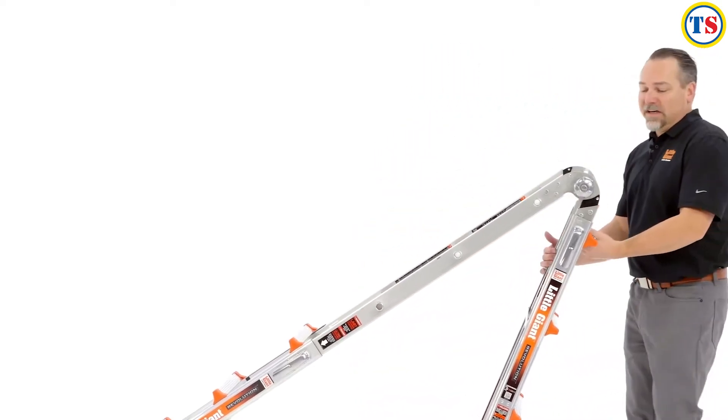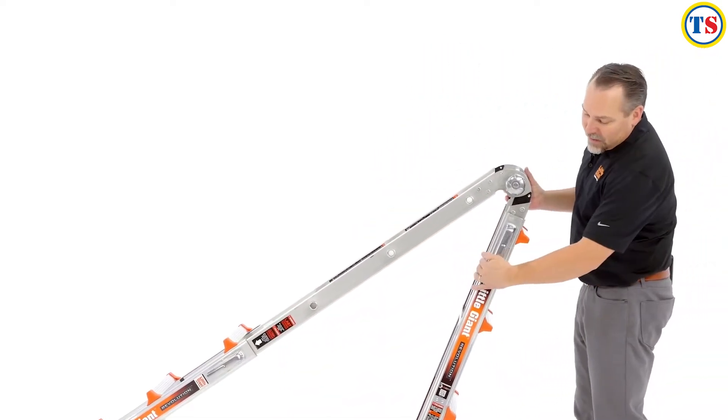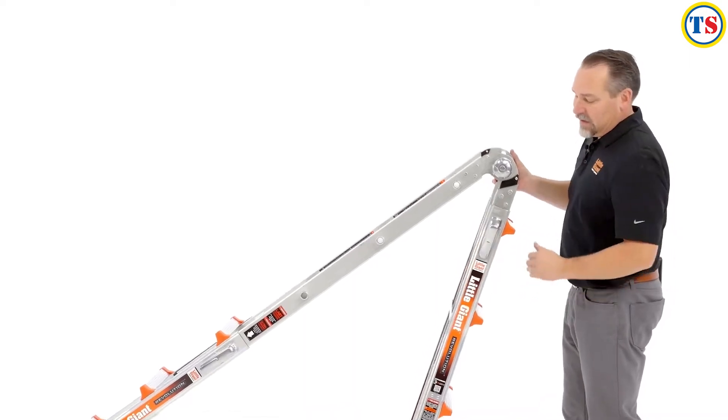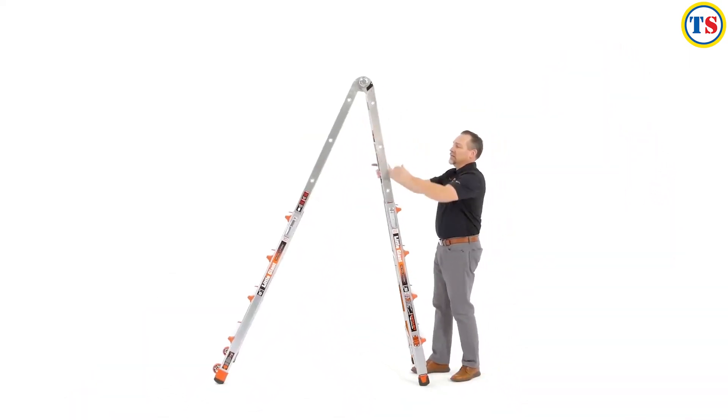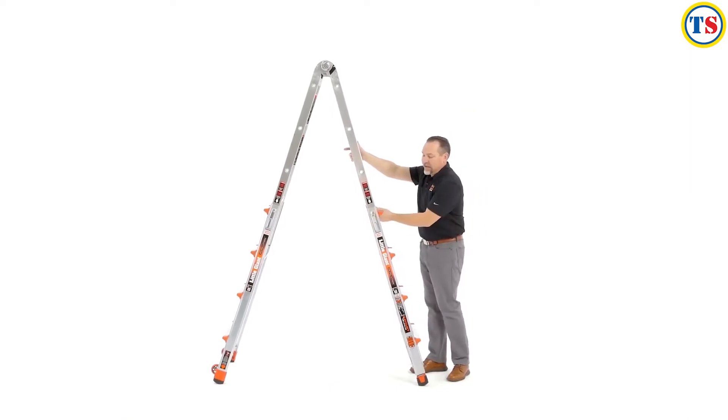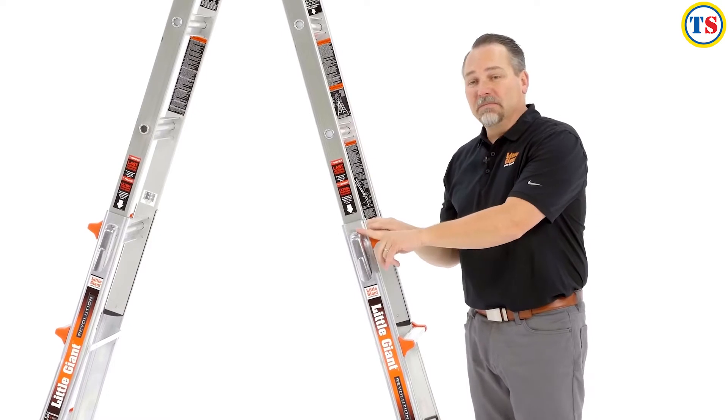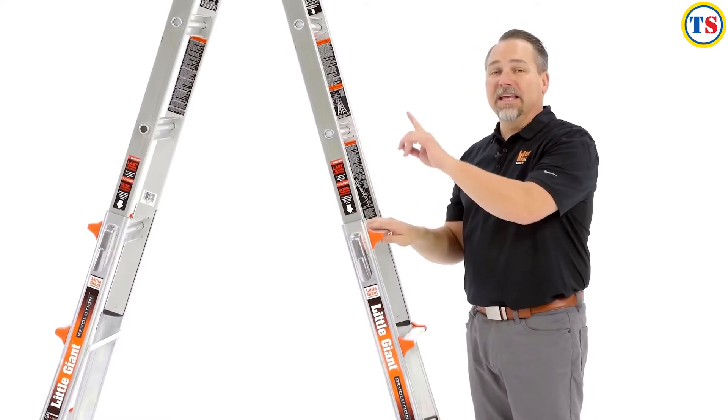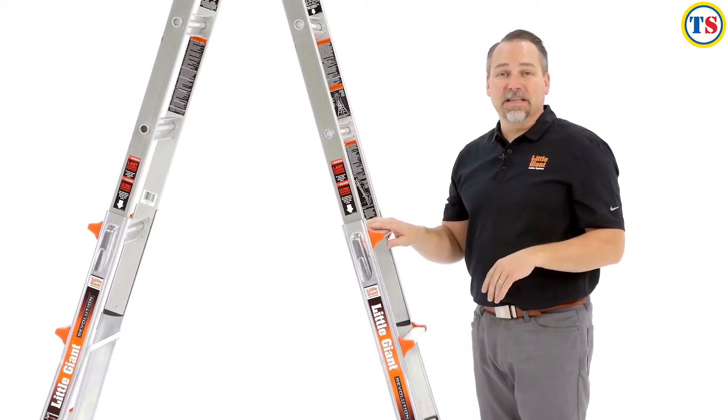We'll do the same thing on this side. Squeeze in the bottom of the rock lock to unlock. Hand over hand, bring it to the height that you desire, and then re-lock. Always make sure that both the rock lock and the hinge are completely locked and fully seated.